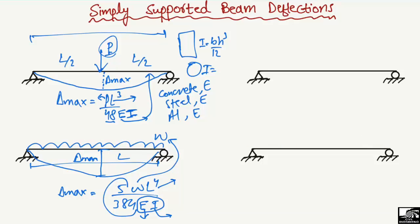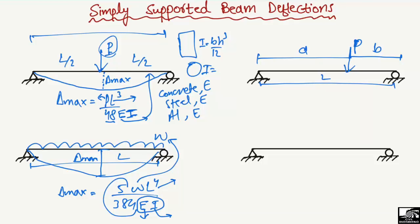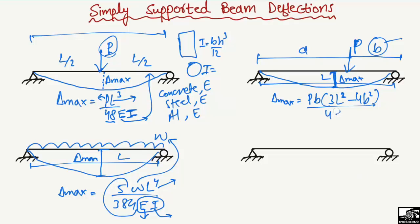The third case is when a point load P acts at a distance A from the left end and a distance B from the right end, where the total beam length is L. The maximum deflection occurs near mid-span and can be found using: δ_max = P·B·(3L² − 4B²) / (48EI), where P is the load, B is the distance from the right end, L is the total beam length, and EI is the stiffness.